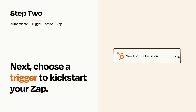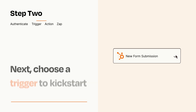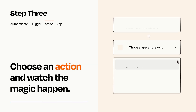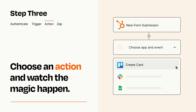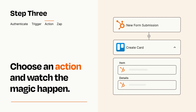This last part is where the magic happens. Choose the action you want to happen in your target app. You'll see a bunch of fields where you can specify the details of your Zap. You can type free-form text or pull data in from your trigger step as needed.